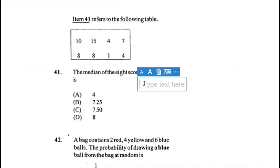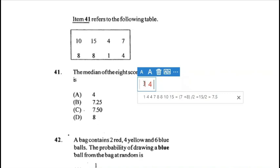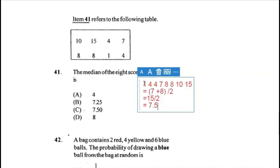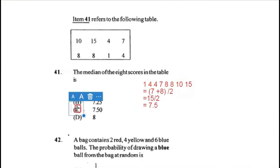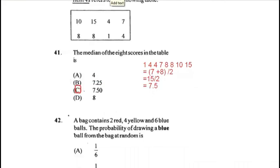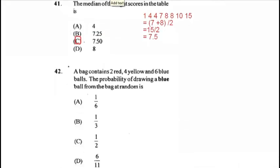Question 41: the median of the eight scores. Remember, with median, we need to arrange our numbers in chronological order — smallest to largest. In this case: 1, 4, 4, 7, 8, 8, 10, 15. The two middle numbers are 7 and 8, so we add those and find the average: 7 + 8 = 15, divided by 2 = 7.5. Answer for 41 is C.